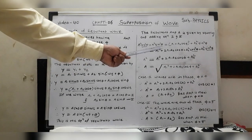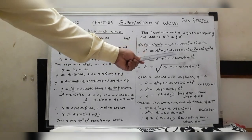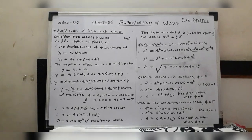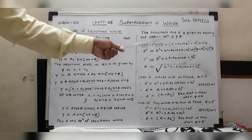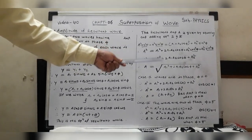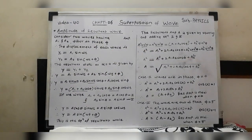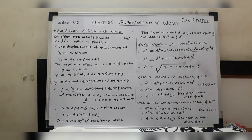Since cos²θ + sin²θ = 1, we get A² = A1² + 2A1 A2 cos φ + A2² cos²φ + A2² sin²φ. Since sin²φ + cos²φ = 1, the last two terms simplify to A2². Therefore: A = √(A1² + 2A1 A2 cos φ + A2²). This is the resultant amplitude A of the resultant wave.